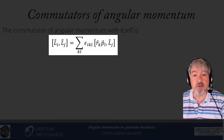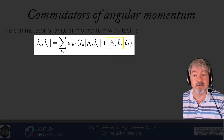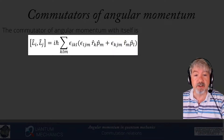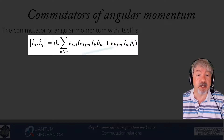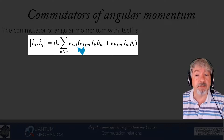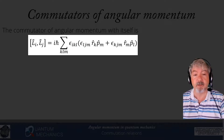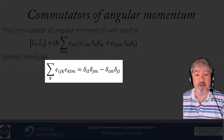To find the commutator of Li with Lj, we write out the definition of Li using the completely antisymmetric tensor and the cross product, use the Leibniz rule to separate the terms, then substitute in the commutators of pl with Lj and of rk with Lj. This produces additional Levi-Civita tensors and products of position with momentum whose indices must be tracked carefully. We end up with sums of the form sum_k of epsilon_ikl * epsilon_kjm, requiring a key identity.